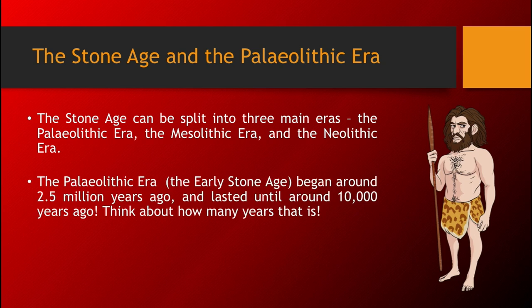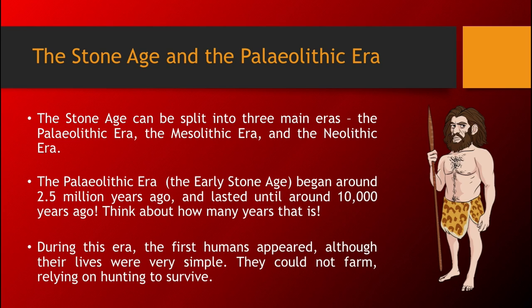The Paleolithic Era, the Early Stone Age, began around 2.5 million years ago and lasted until around 10,000 years ago. Think about how many years that actually is. During this era, the very first humans appeared, although their lives were very simple and they were not exactly like us. They could not farm either and had to rely on hunting and scavenging to survive.